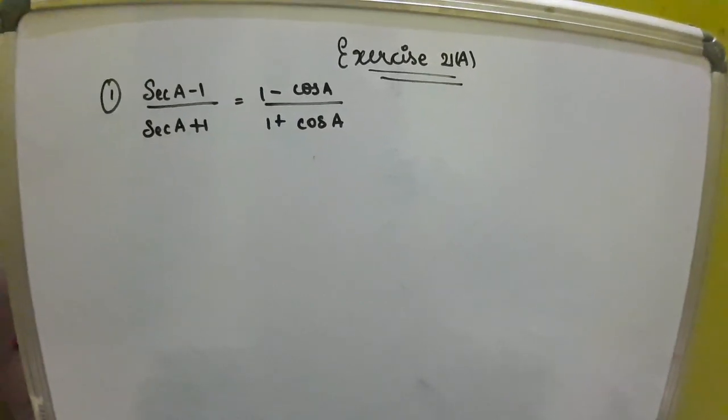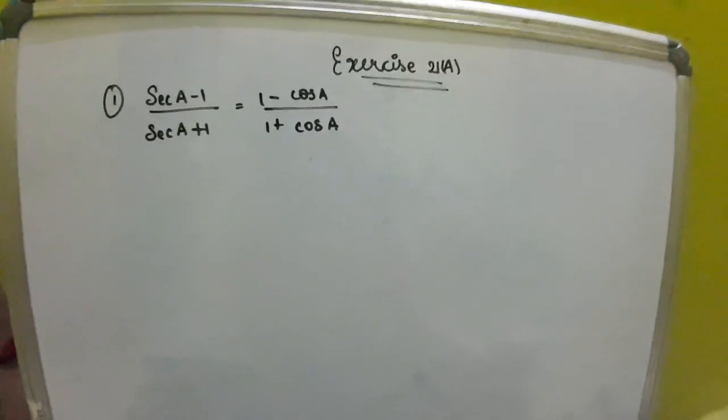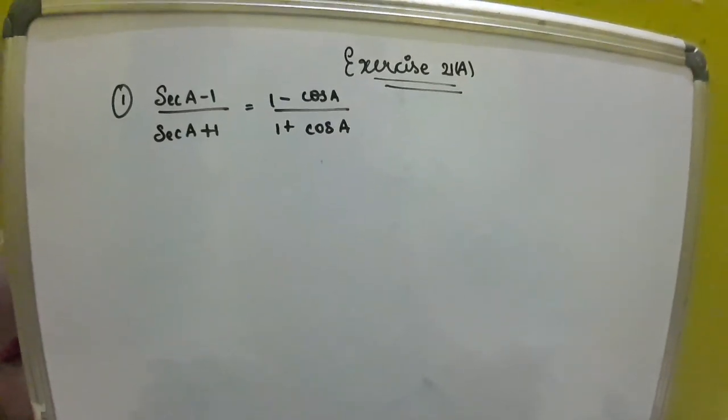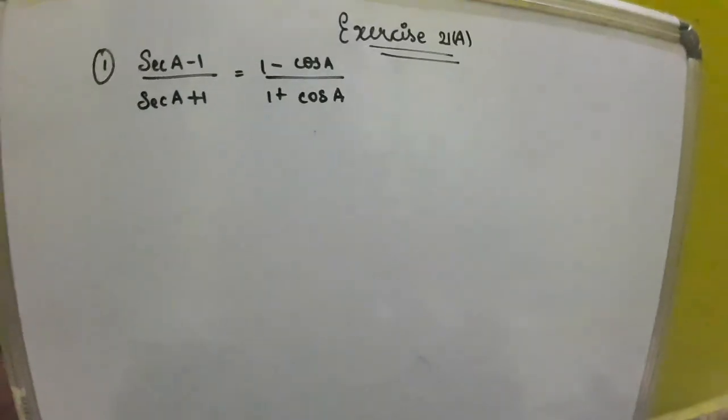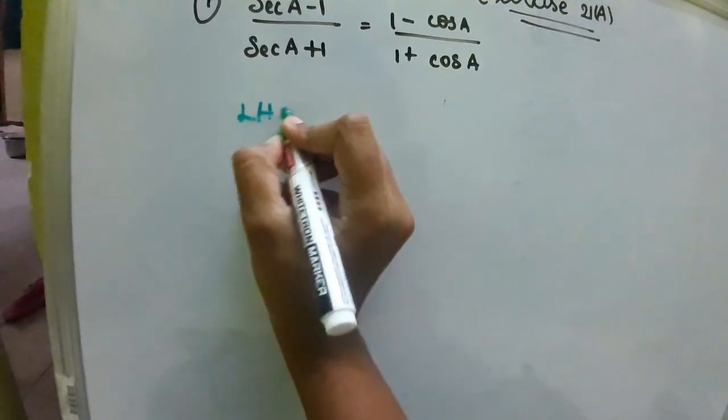We are going to see Exercise 2(A), first question: sec A minus 1 divided by sec A plus 1 equals 1 minus cos A divided by 1 plus cos A. Here we have LHS and RHS. First we are taking LHS.